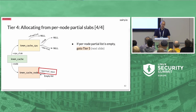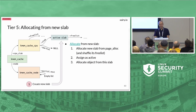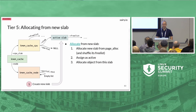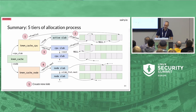The final tier — tier five — is when we have no slabs on any list at all. In this case the SLUB allocator allocates a new active slab: it goes to pagealloc, requests pages, creates a free list for the slab in random order, assigns it as the active slab, and then allocates an object from it. So the five tiers are: lockless free list, per-active-slab free list, per-CPU partials, per-node partials, and creating a new slab.